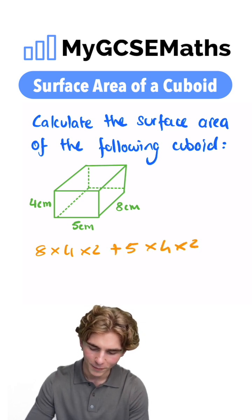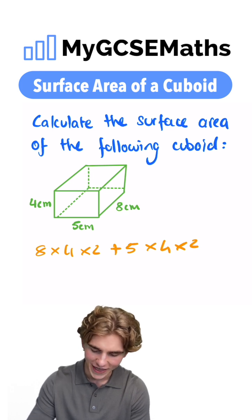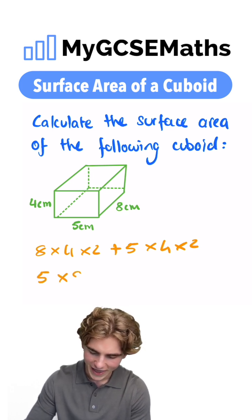And lastly, we have our top and our bottom, a width of five and a length of eight. So we have five times by eight times by two.